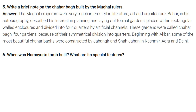The Mughal emperors were very interested in literature, art, and architecture. Babur, in his autobiography, described his interest in planning and laying out formal gardens placed within rectangular wall enclosures and divided into four quarters by artificial channels. These gardens were called Chahar Bagh — meaning four gardens — because of their symmetrical division into quarters. Beginning with Akbar, some of the most beautiful Chahar Baghs were constructed by Jahangir and Shah Jahan in Kashmir, Agra, and Delhi.